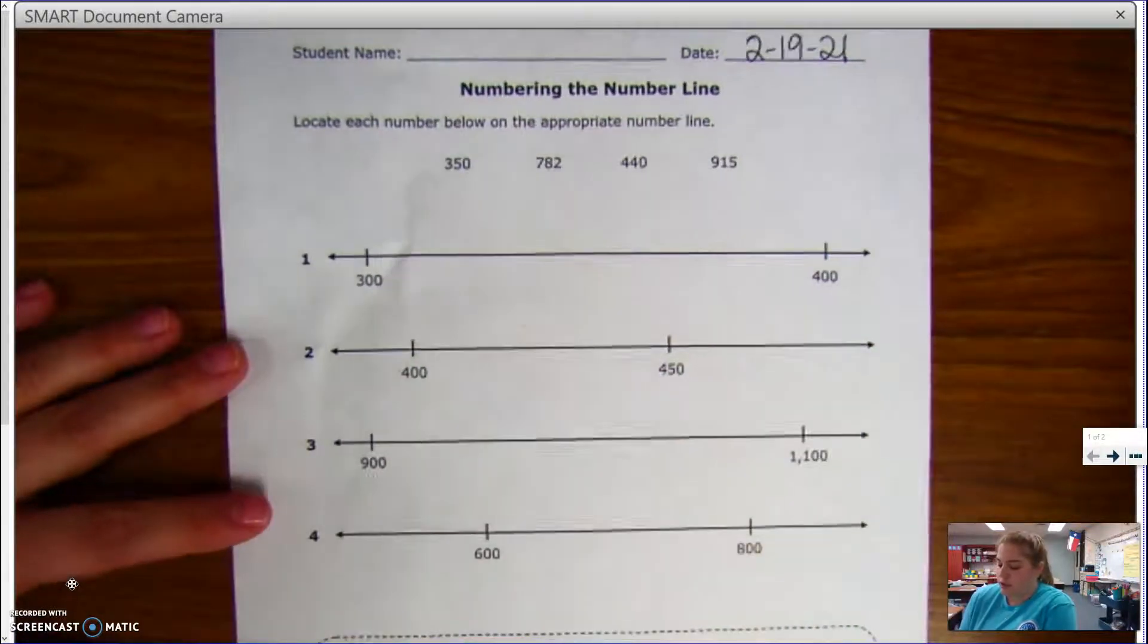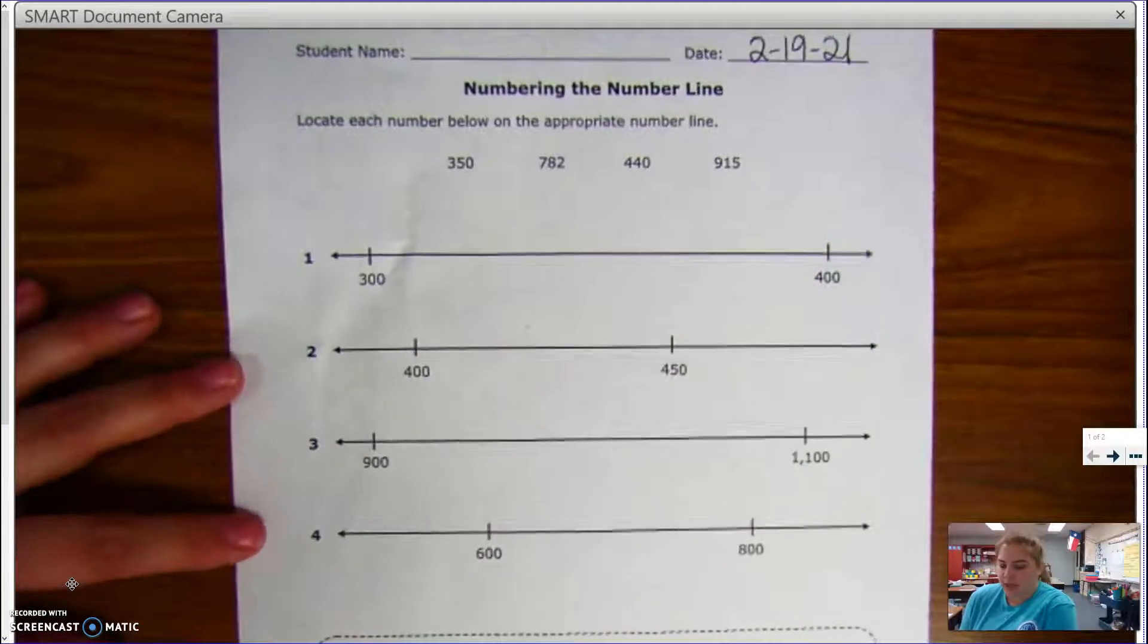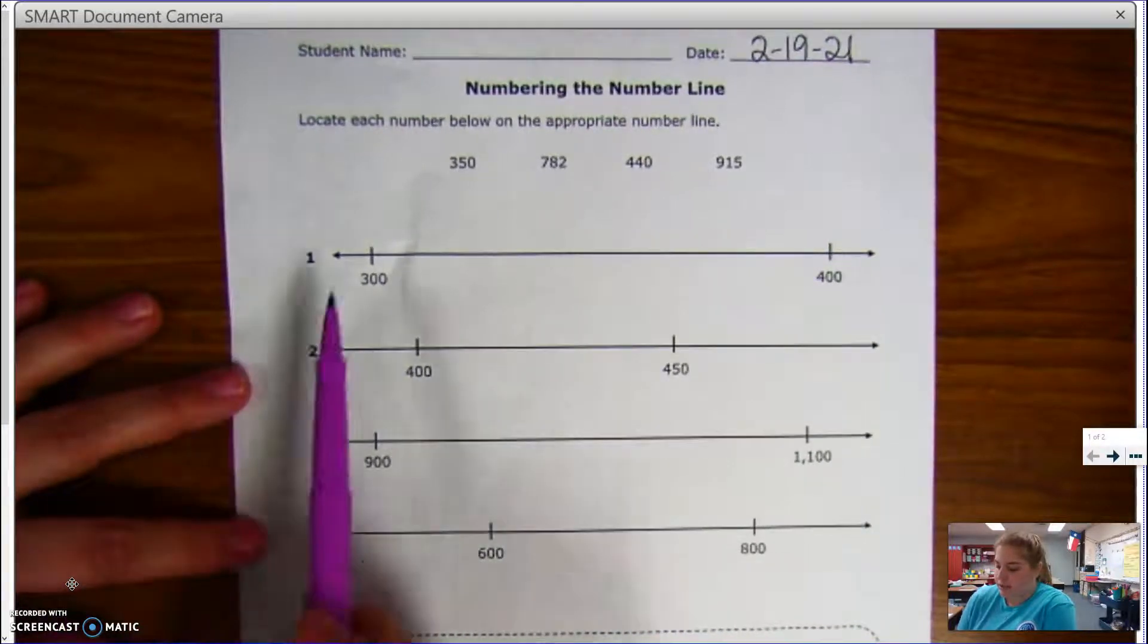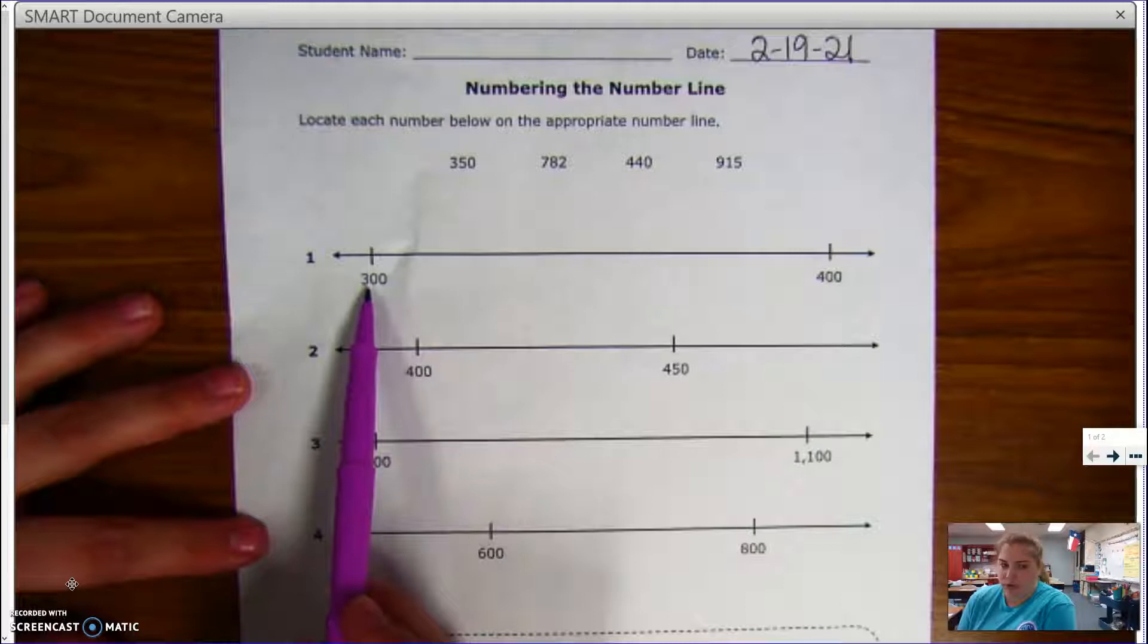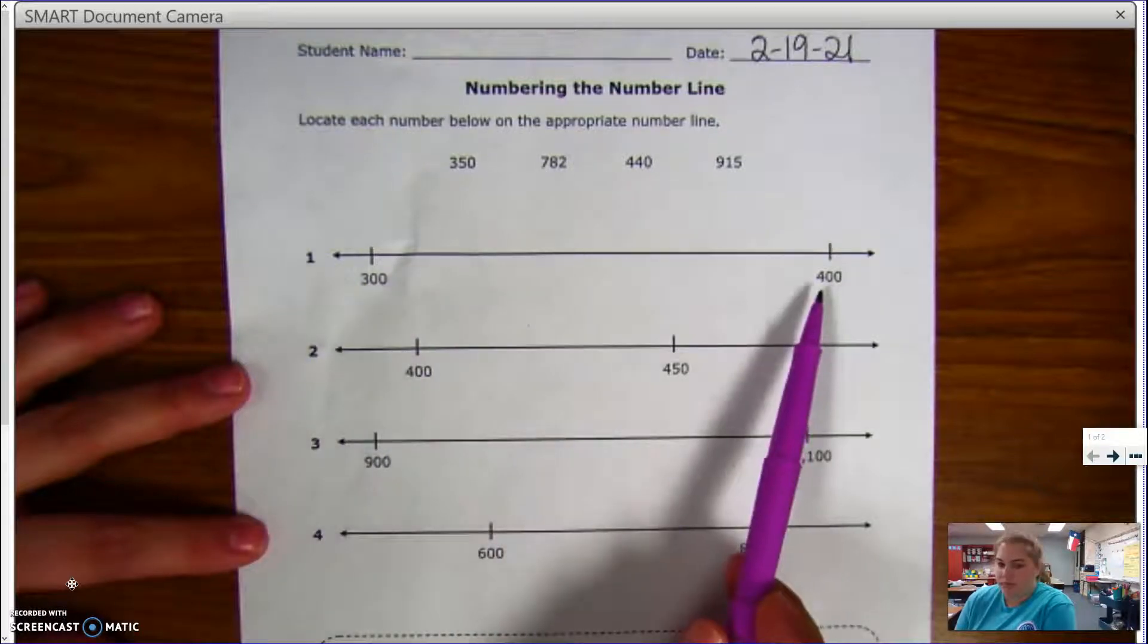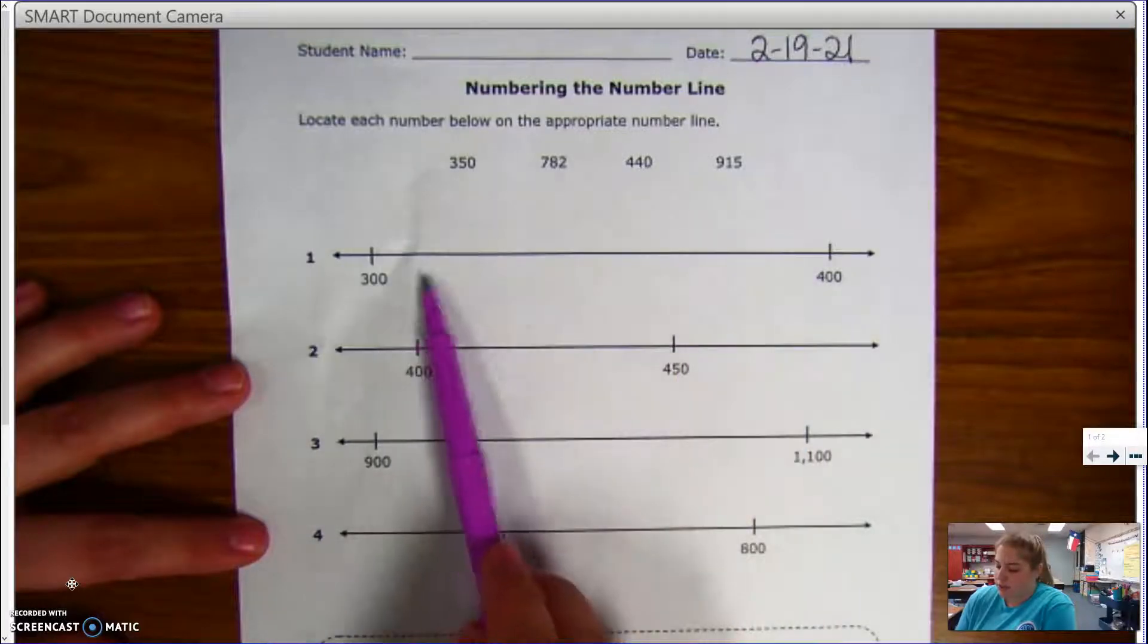So I look at these number lines and I need to figure out which number would go on each one. I know that my first number line here has 300 as a starting point and 400 as an endpoint, so one of these numbers has to go between those two numbers.